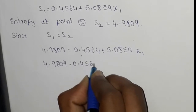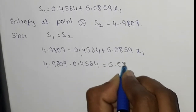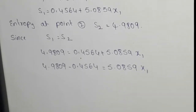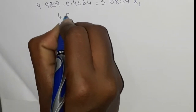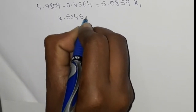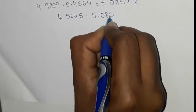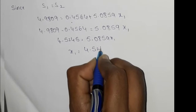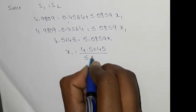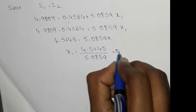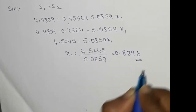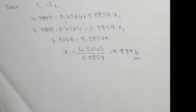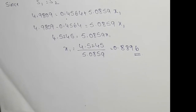Simplifying, we get 4.5245 equals 5.0859 x1, so x1 equals 4.5245 divided by 5.0859, which equals 0.8896. So the dryness fraction x1 is 0.8896.